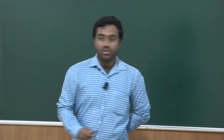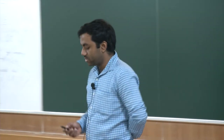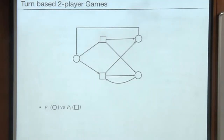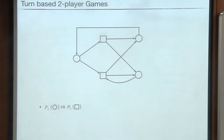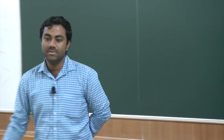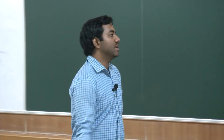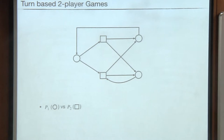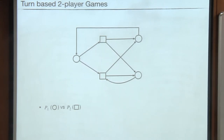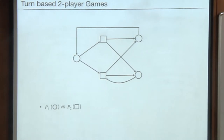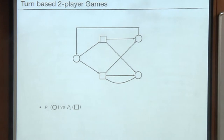When we talk about games, we generally talk about games on finite graphs. In turn-based two-player games, we have two players, player 1 and player 2. We have two types of vertices in the graph: circle vertices and square vertices. Circle vertices are controlled by player 1 and square vertices are controlled by player 2.